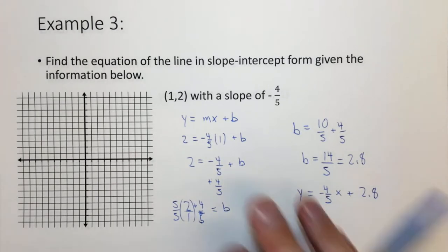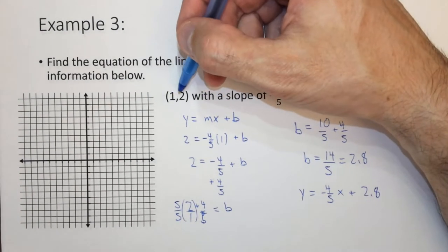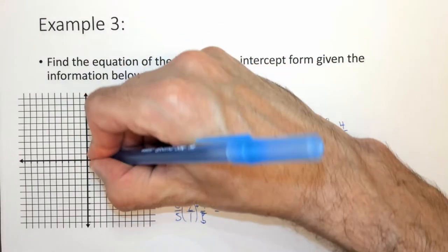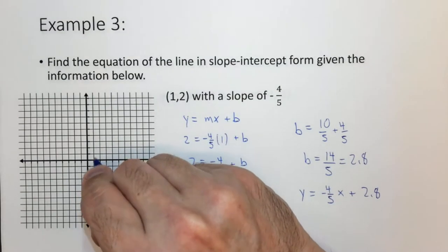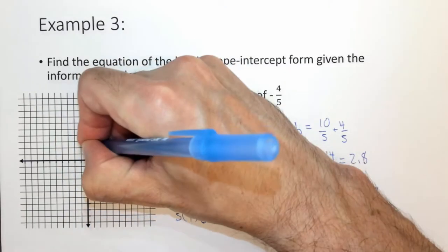Now because I wanted to show you that this is actually coordinates that actually give you a line, let's actually graph this thing. So first of all, find the point that we know, 1, 2. 1 on the x-axis, 1, 2 on the y-axis.